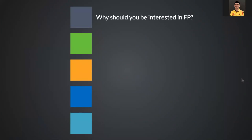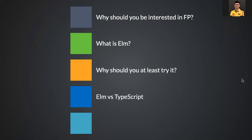Today's agenda will be: first, explaining why you should be interested in functional programming; what exactly Elm is and why you should at least try it. Then, since we're the web UI community using JavaScript and TypeScript — the most popular solution for static typing in JavaScript — and since Elm also provides static typing, I decided to compare them. Finally, I'll show you alternatives to Elm: other FP languages that compile to JavaScript.